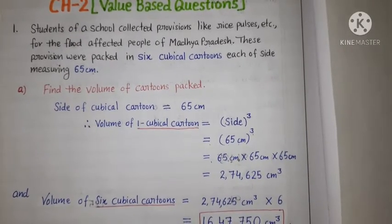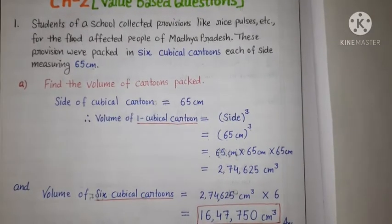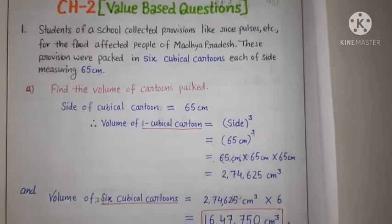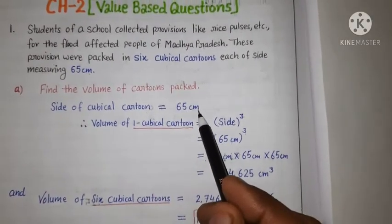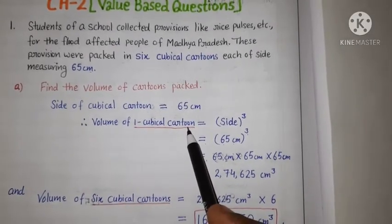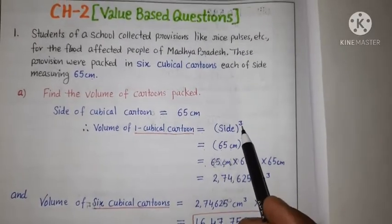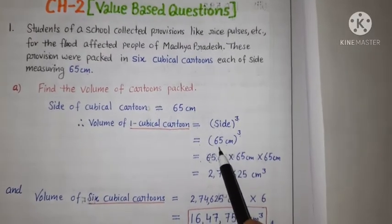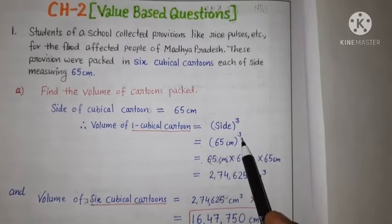Hamein volume find karna hai cartons ka jinn ke andar khanne ka woh sara saman pack kiya gaya. So, hume given hai side of cubical carton is equal to 65 cm. Therefore, volume of one cubical carton ke liye hamare paas formula hai side cube. Side ki value yaha paas place karenge 65 cm ka whole cube karenge.